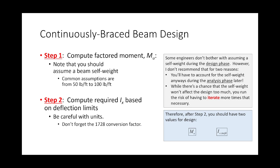Common assumptions for self-weight are somewhere between 50 and 100 pounds per foot. More often than not, I will tell you what to assume in the design phase so that we all arrive at the same answer. In the real world, you have to pick something. With experience, you'll get better at assuming self-weights — the heavier the loads, the bigger the beam needs to be.